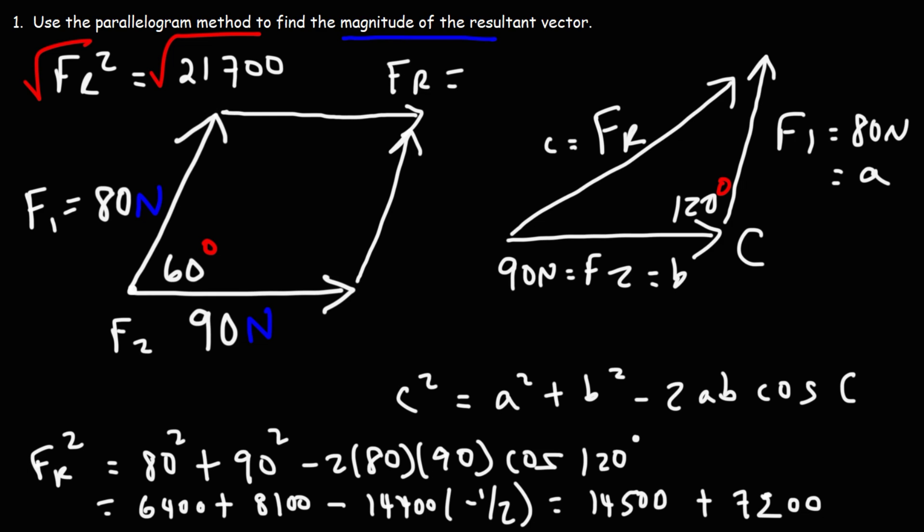Now we need to take the square root of both sides to get FR. So this is going to be approximately 147.3 Newtons. So that's the magnitude of the resultant force vector. That's how you could find it using the parallelogram method.